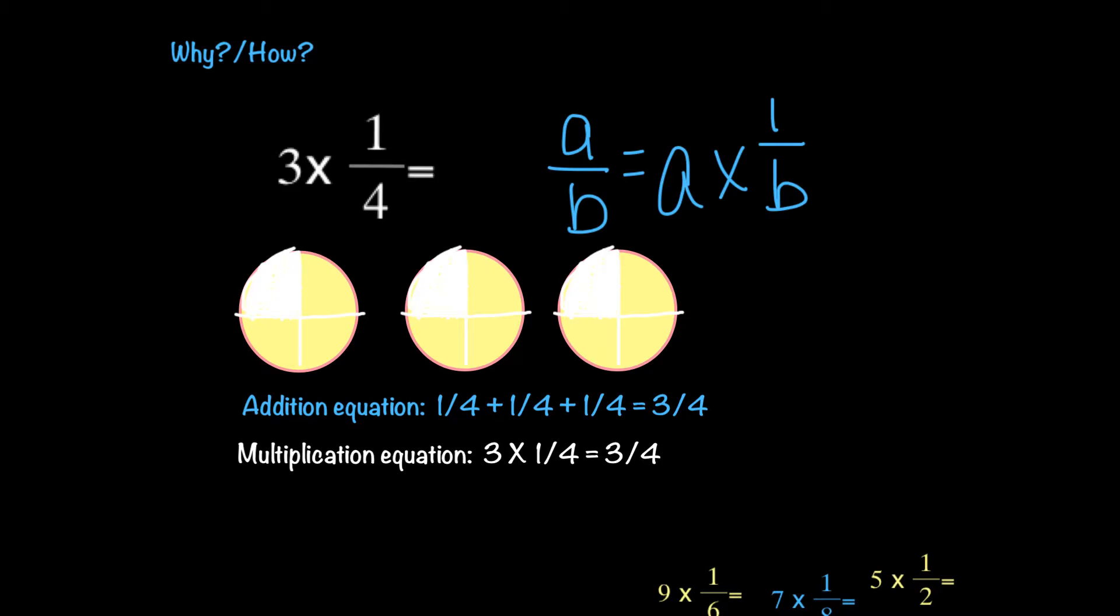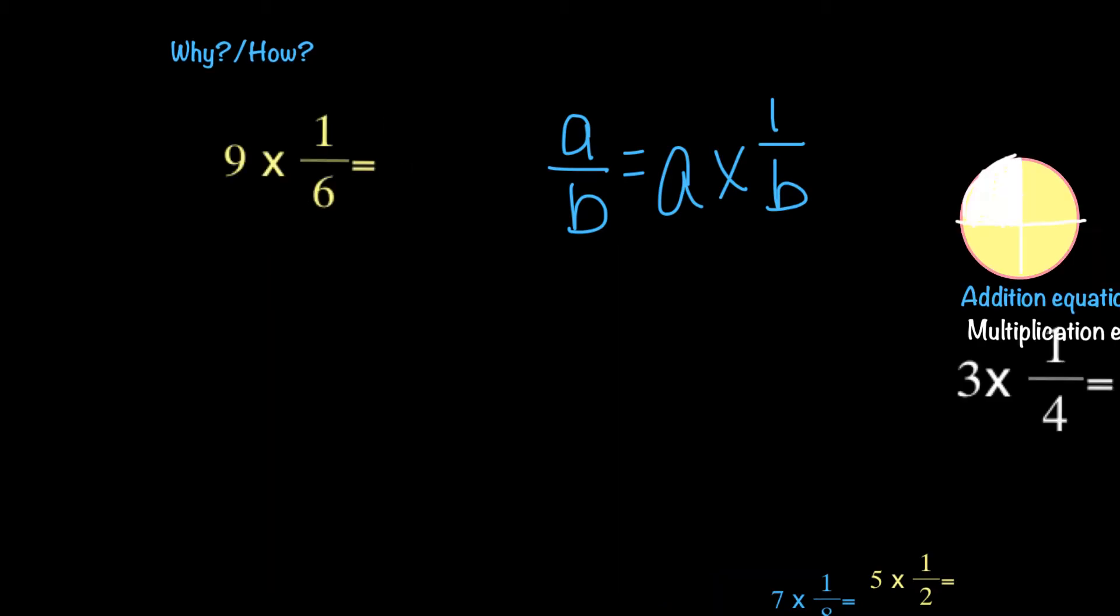So let's try to solve some others. So now I have 9 times 1/6. So basically what does that mean? That means that I could have 1/6 nine times and add them all together, and what would I get if I had 1/6 nine times? I would have 9/6. If I multiply 9 times 1/6, I also get 9/6.